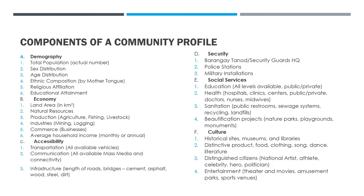A comprehensive community profile has several components categorized into six major parts: demography, economy, accessibility, security, social services, and culture.